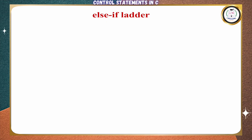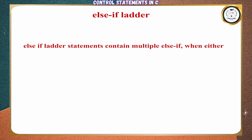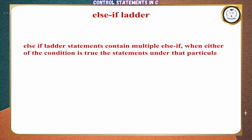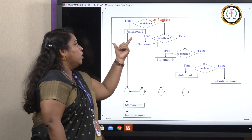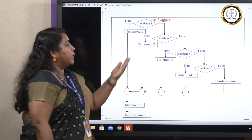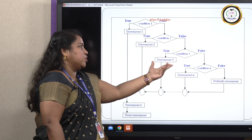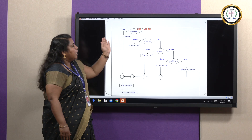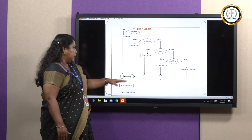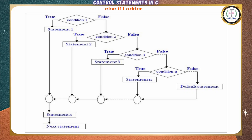Next is the else-if ladder. The else-if ladder statement contains multiple else-if blocks; when either of the conditions is true, the statement under that particular if will be executed. Looking at the flowchart: for each condition we have a separate set of statements. If condition 1 is true, statement 1 executes. If condition 2 is true, statement 2 executes, and so on up to n conditions. If all conditions are false, it comes to the last default statement and prints it.